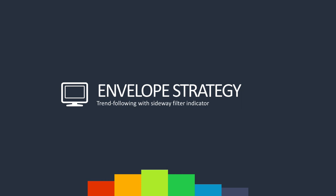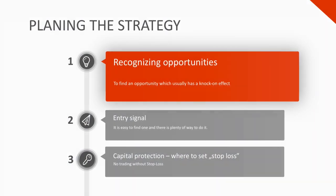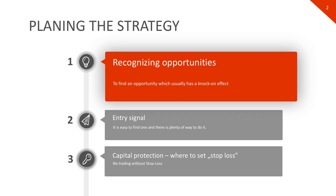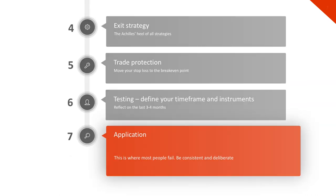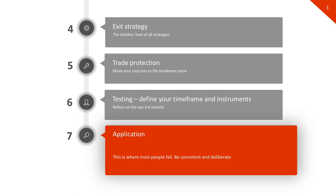Today I would like to introduce you to the envelope strategy. All strategies are built from the same elements: one, recognizing opportunities — finding an opportunity which usually has a knock-on effect; two, signal — it is easy to find one and there are plenty of ways to do it; three, capital protection — where to set stop loss, you must not trade without setting a stop loss; four, exit strategy — the Achilles heel of all strategies; five, trade protection — move your stop loss to the break-even point; six, testing — define your time frame and instruments, reflect on the last three to four months; seven, application — this is where most people fail, be consistent and deliberate.